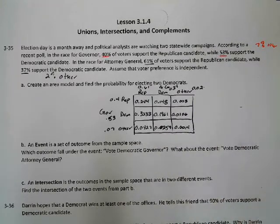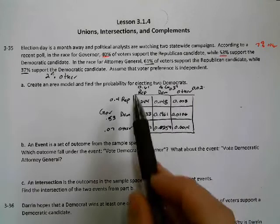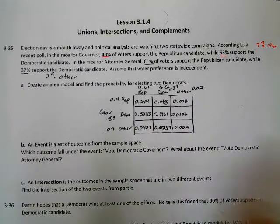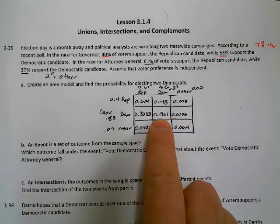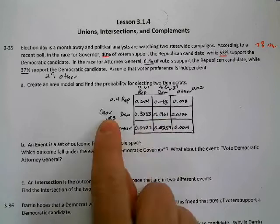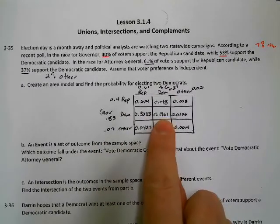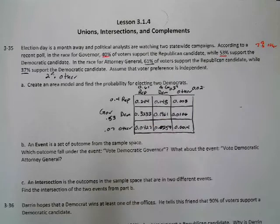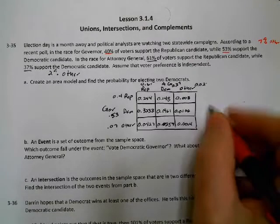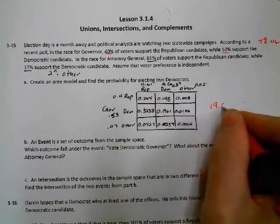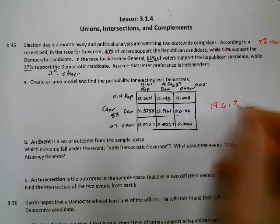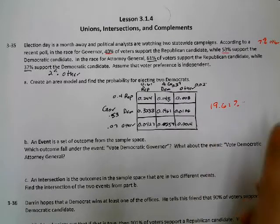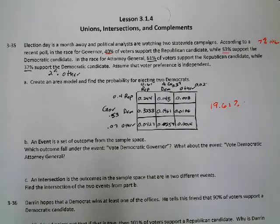Find the probability for electing two Democrats. That's right there — Democrat for governor and Democrat for attorney general — which is 0.1961, so 19.61%. That's the chance of voting Democratic for both governor and attorney general.